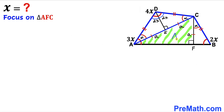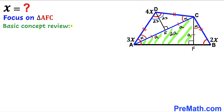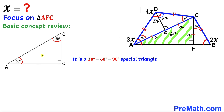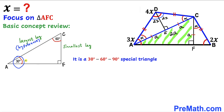Now let's focus on right triangle AFC. We know side AC equals a plus a, which is 2a, and side FC equals lowercase a. Before proceeding, let's recall the basic concepts of a special 30-60-90 triangle. The 30-degree angle is the smallest, and the leg opposite to it is the smallest leg.